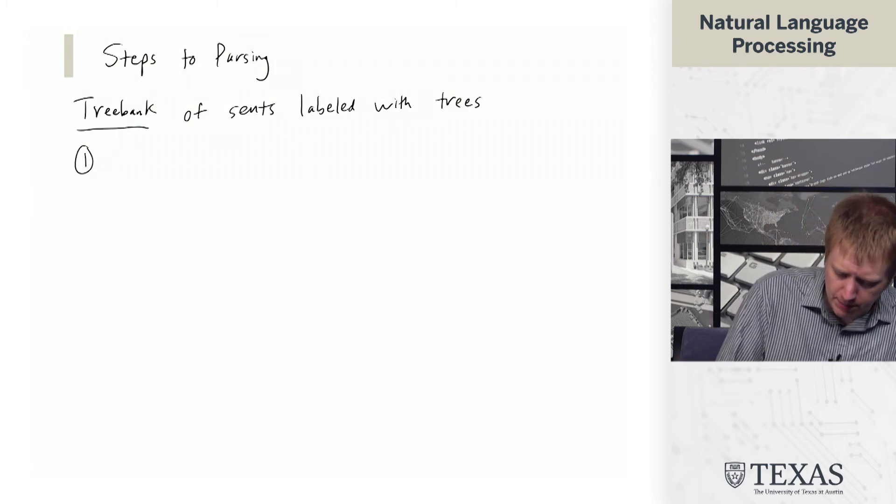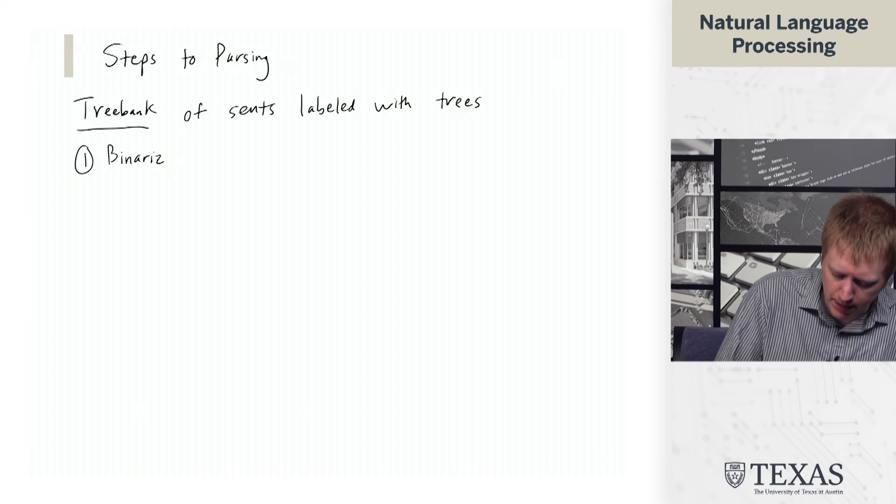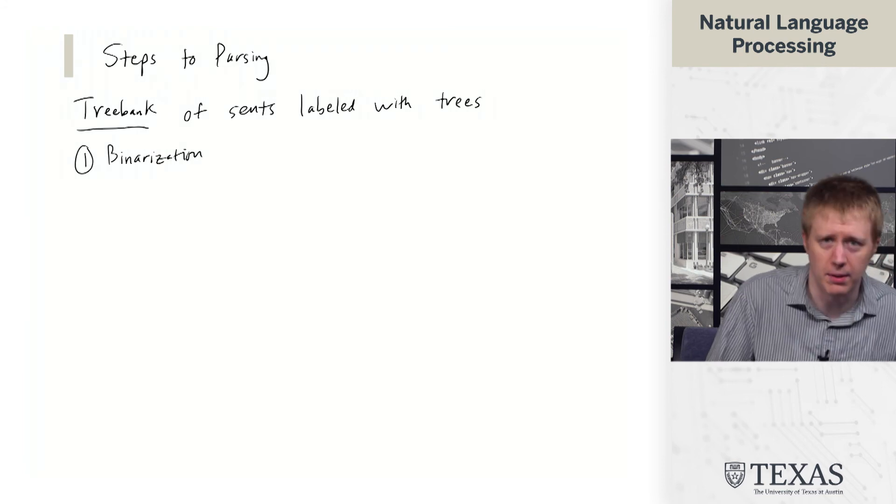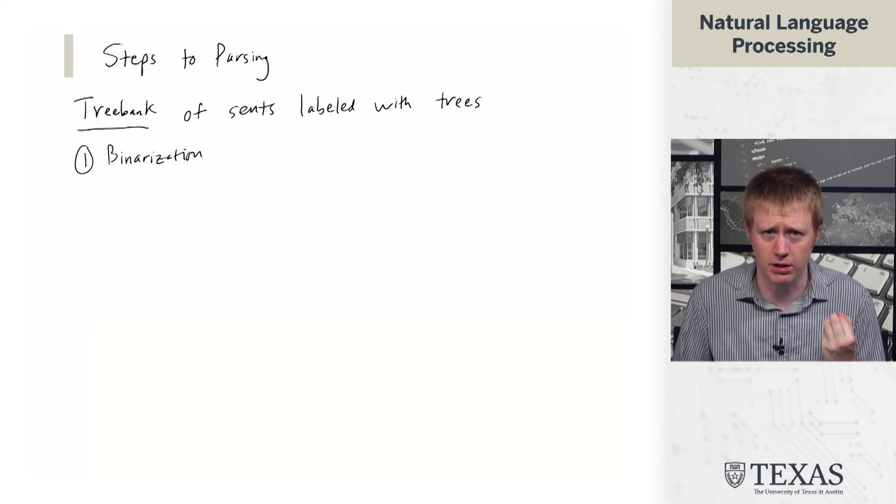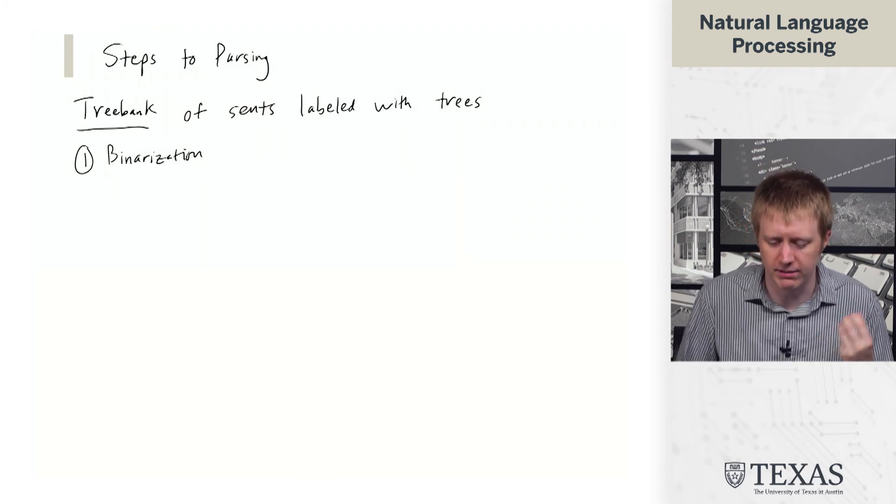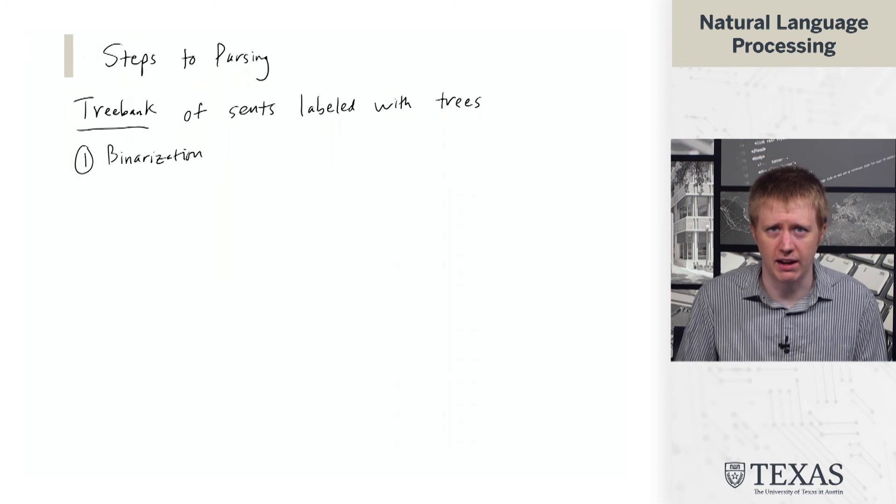The first step of this process is what we call binarization. This is turning the trees into trees consisting of binary and unary productions, rather than higher order n-ary productions.